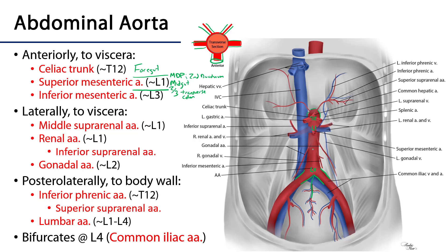At approximately the L3 level we have the inferior mesenteric artery, which is going to supply the hindgut with blood. The hindgut is the distal part of the transverse colon through to the rectum. So to summarize: celiac trunk at T12, superior mesenteric artery at L1, and inferior mesenteric artery at L3.